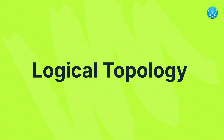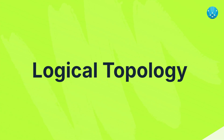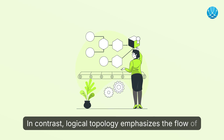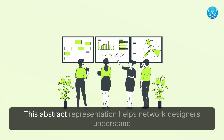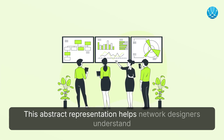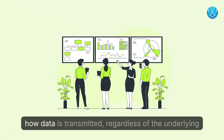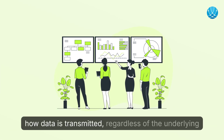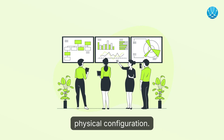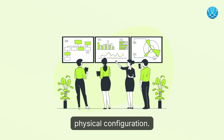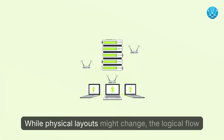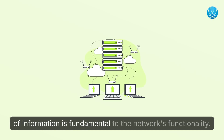Logical topology. In contrast, logical topology emphasizes the flow of data between devices. This abstract representation helps network designers understand how data is transmitted, regardless of the underlying physical configuration. While physical layouts might change, the logical flow of information is fundamental to the network's functionality.